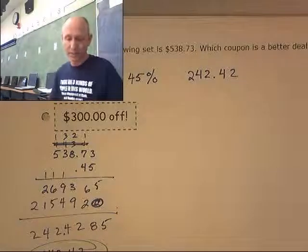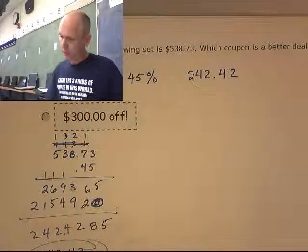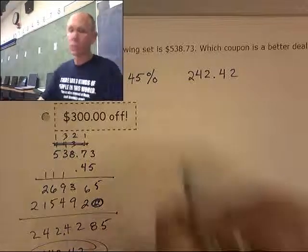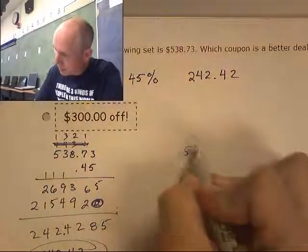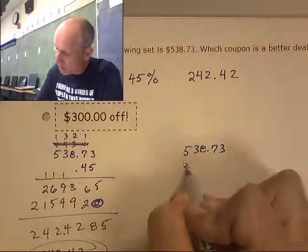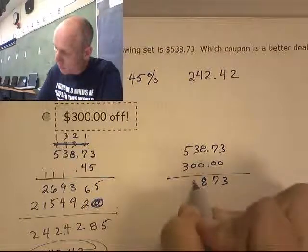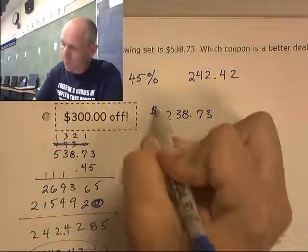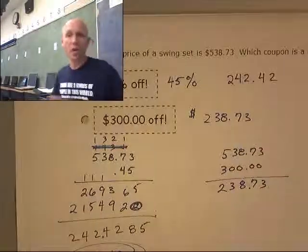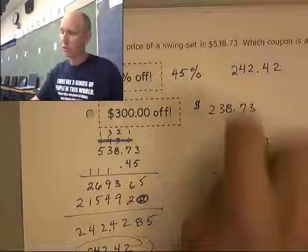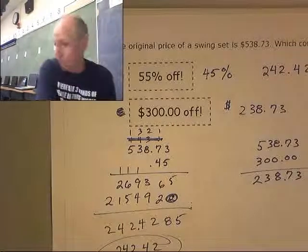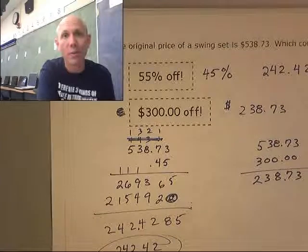Let me just check on the calculator: 0.45 times 538.73 — yes, $242.42. And the other option is $300 off, so $538.73 minus $300 gives $238.73. So what should I go with? The $300 off is the better deal. That video went a little long mainly because of the multiplying decimals — that takes some time, so just slow down when you're doing these and give them a good shot.